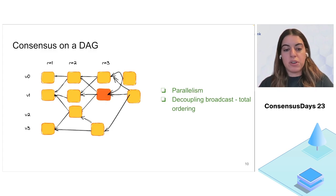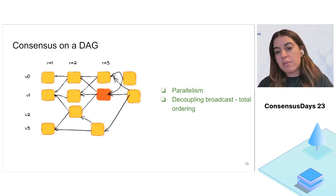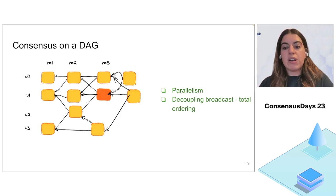DAG protocols are great for several reasons. They allow parallel block creation, achieving high throughput because they utilize all system resources symmetrically. Importantly, they decouple consistent broadcast from ordering, meaning broadcasts can continuously happen even under faulty leaders. When a leader is faulty and consensus must be postponed until we find a correct leader, we still continue to broadcast blocks that will eventually be committed by a correct leader. This allows high throughput even under faults.